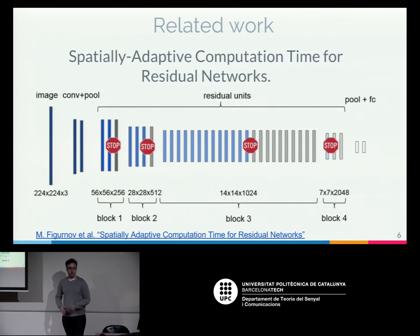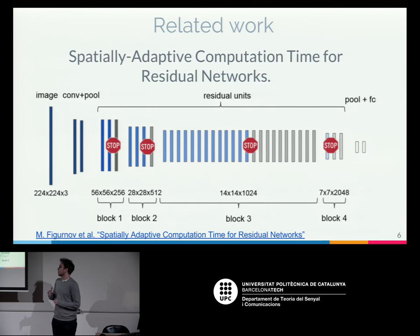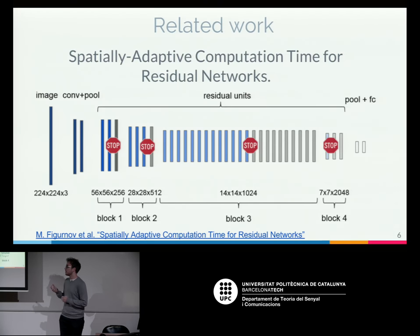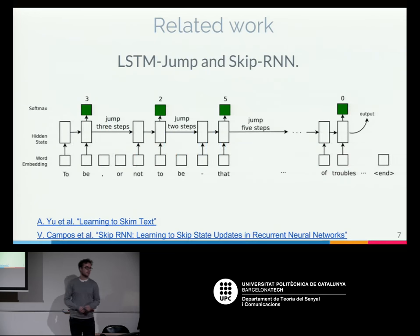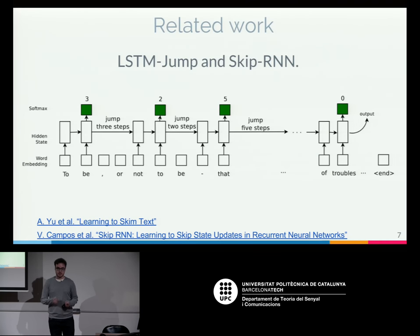Some related work that also tried variable computation includes adaptive computation time for residual networks — a kind of convolutional neural network that analyzes images — capable of stopping computation early, where each part of the image doesn't have to go through the whole network. Other examples are LSTM-Jump and Skip RNN, which are capable of not looking at all samples of a sequence and can decide whether to look at each sample.